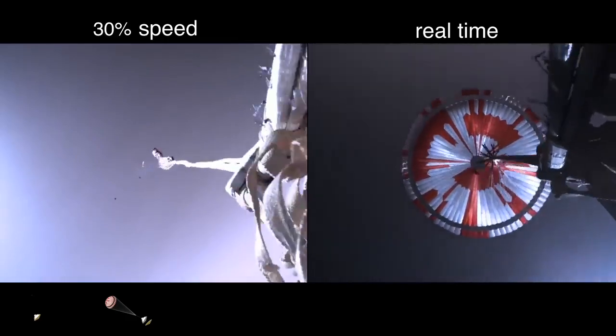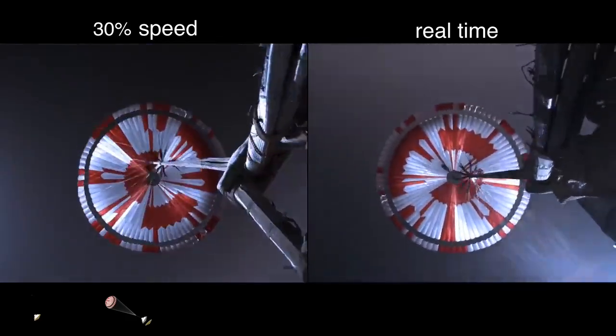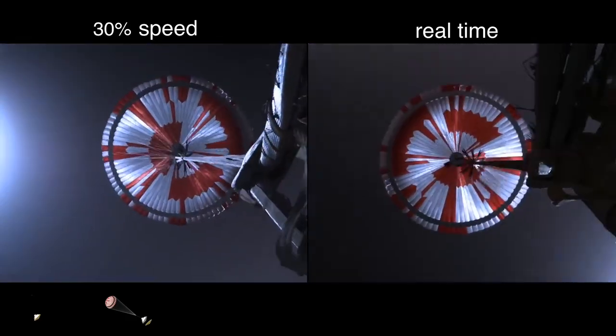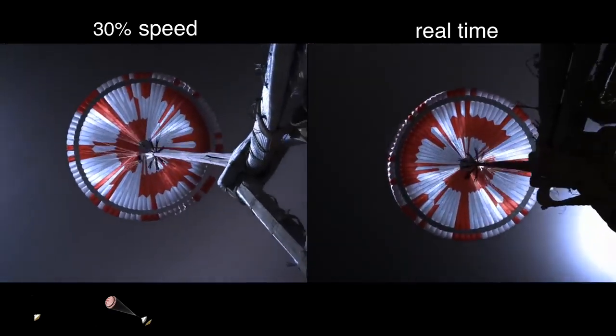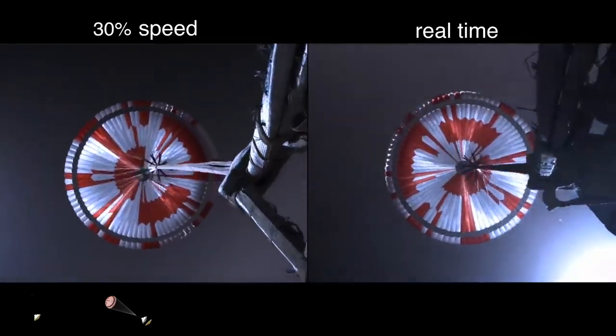Parachute deployed. Navigation has confirmed that the parachute has deployed, and we are seeing significant deceleration in the velocity. Our current velocity is 440 meters per second at an altitude of about 12 kilometers from the surface of Mars.